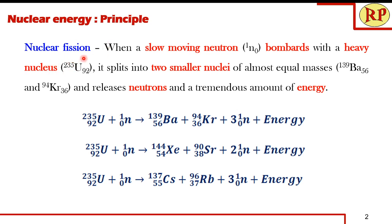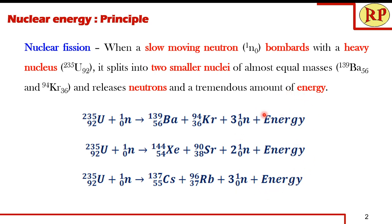Let us understand the principle of nuclear fission reaction. When a slow-moving neutron bombards a heavy nucleus, it splits into two smaller nuclei of almost equal masses and releases neutrons and a tremendous amount of energy. When a slow-moving neutron bombards uranium-235, it splits to give two smaller nuclei like barium-krypton or xenon-strontium or cesium-rubidium, and two or three neutrons are produced along with a tremendous amount of heat energy.